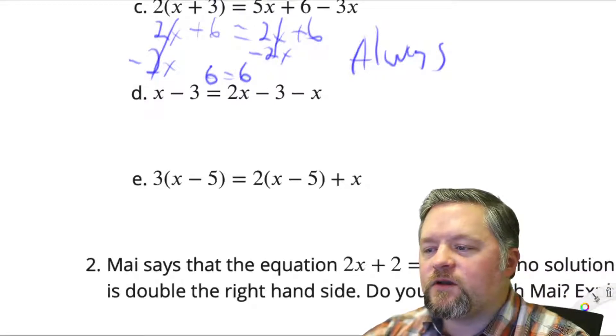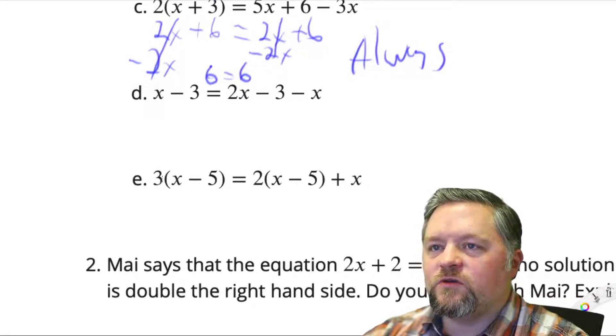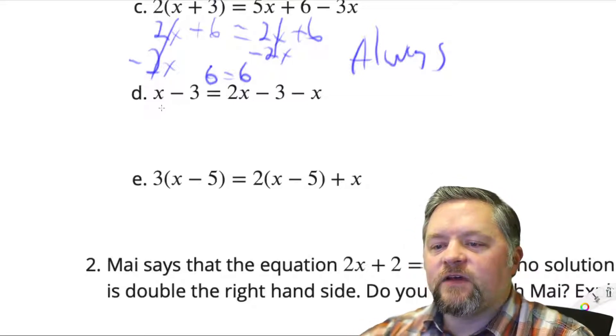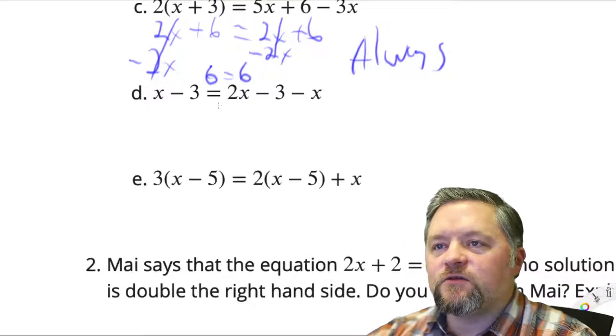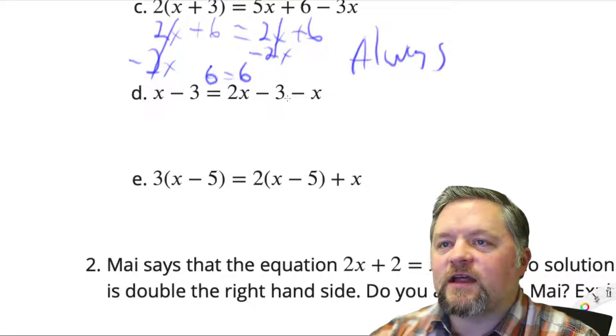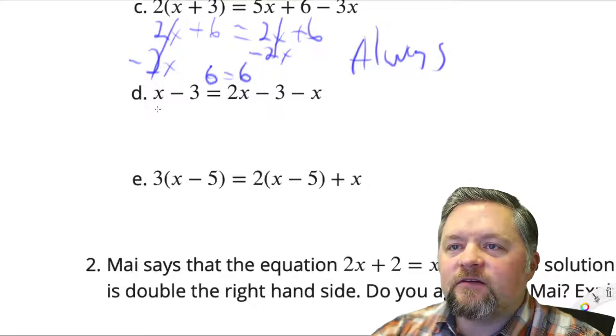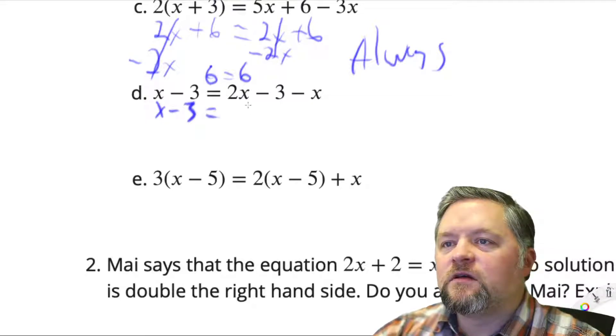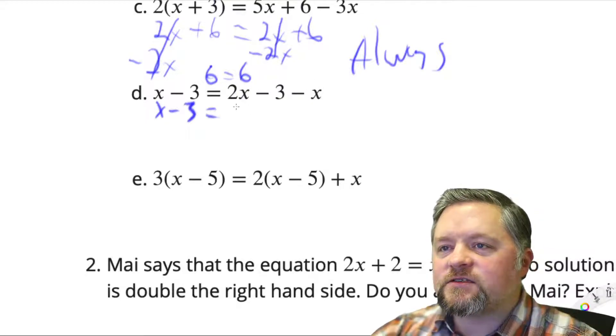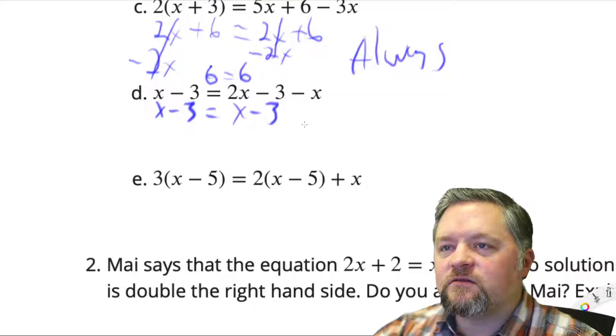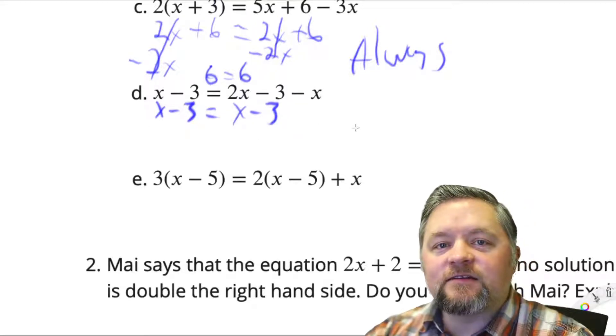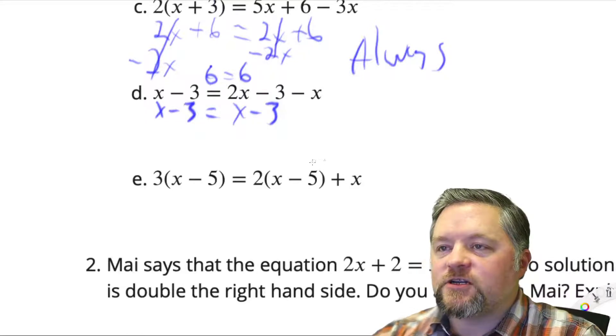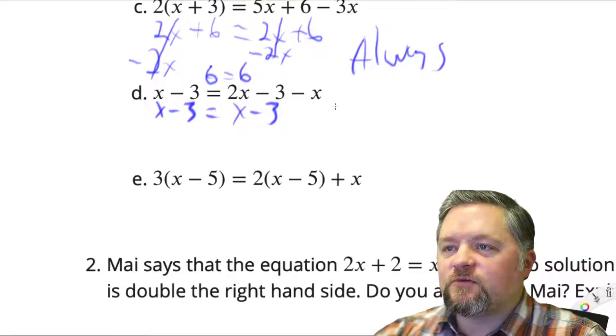Next we have x subtract 3 equals 2x subtract 3 subtract x. Can't really do much to the left side, but 2x subtract x on the right is just x. We've got identical stuff on each side of the equation again. So that's always going to be true.